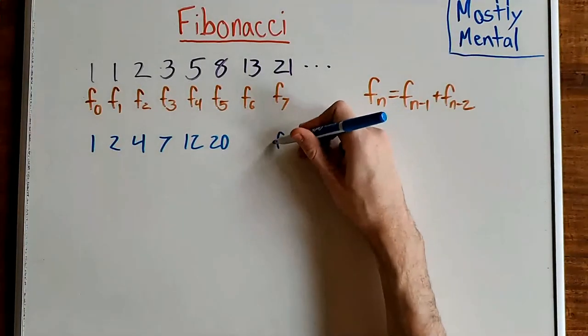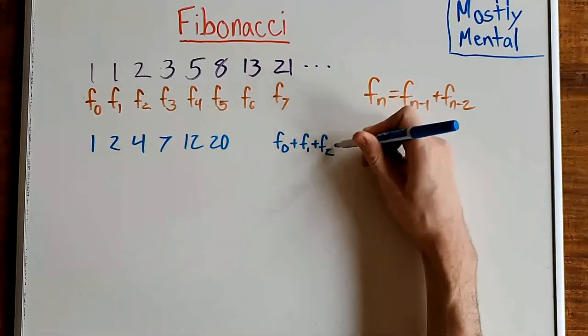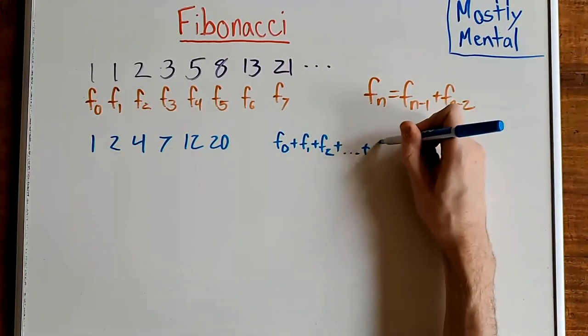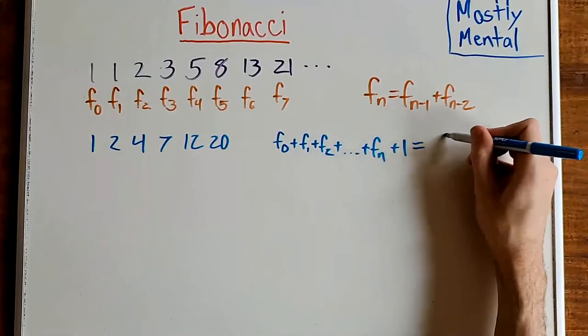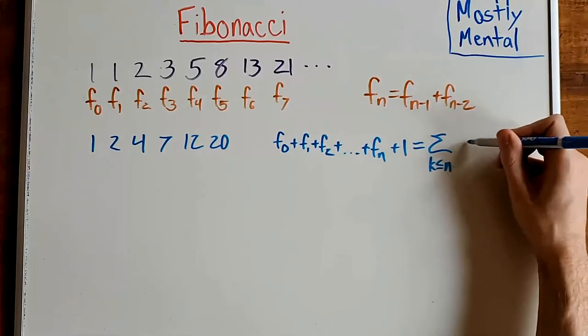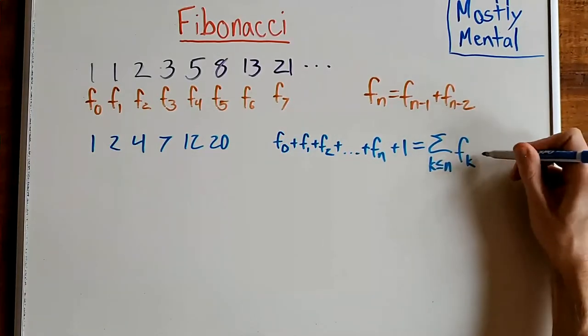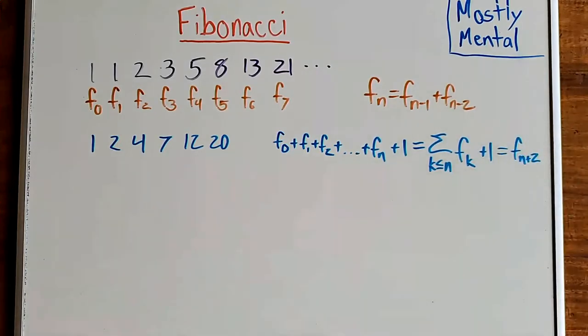Putting that in symbols, we get F0 plus F1 plus F2 plus so on up to Fn plus 1, which we can more compactly write as the sum of k less than or equal to n of Fk plus 1, is just going to be F sub n plus 2. Okay, now that we've got a formula, let's prove it. As usual, we'll do that by counting something in two ways.